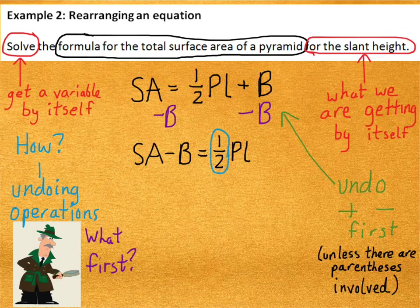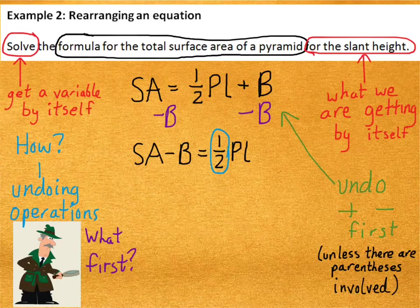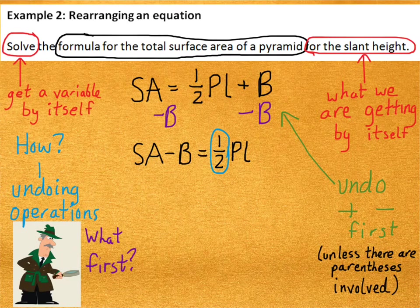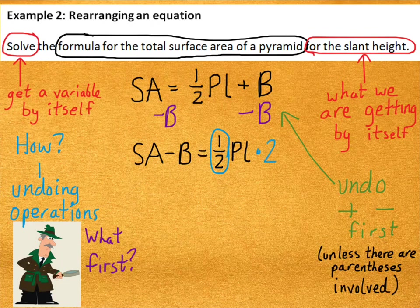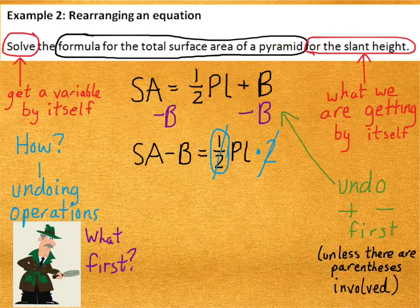Okay? How about undoing, then, the 1/2? Well, the opposite of multiplying by a half, which is dividing by 2, okay, would be to multiply by 2. So, if I multiply by 2 on that side, I'll need to also multiply by 2 on the other side.